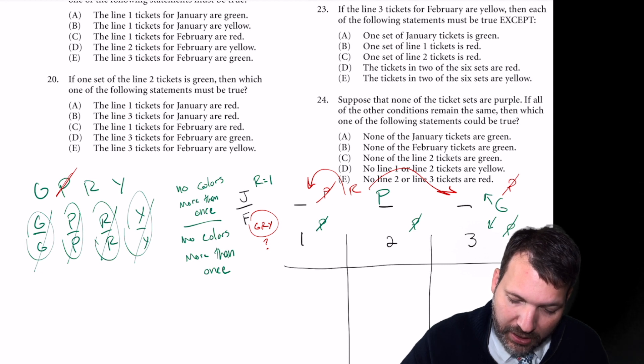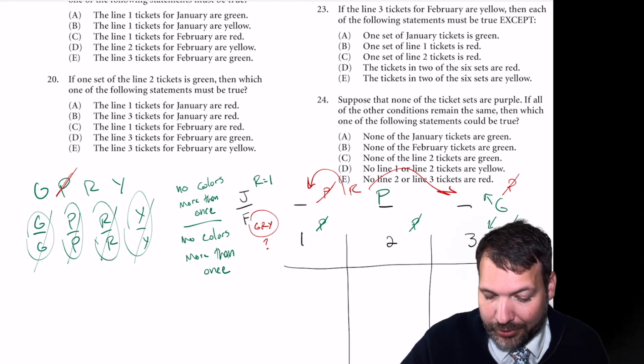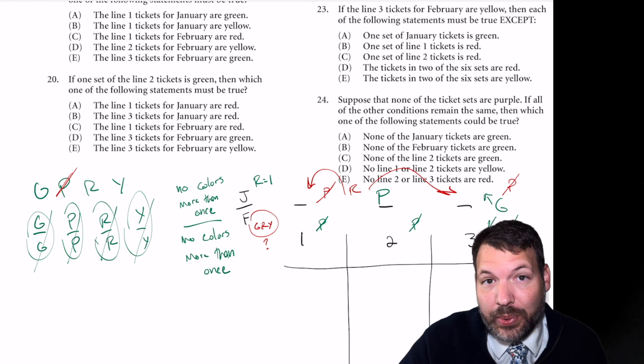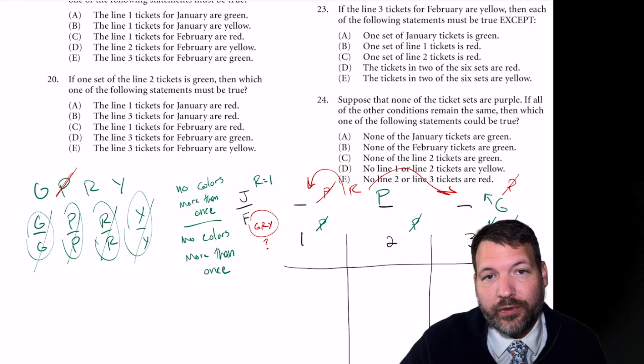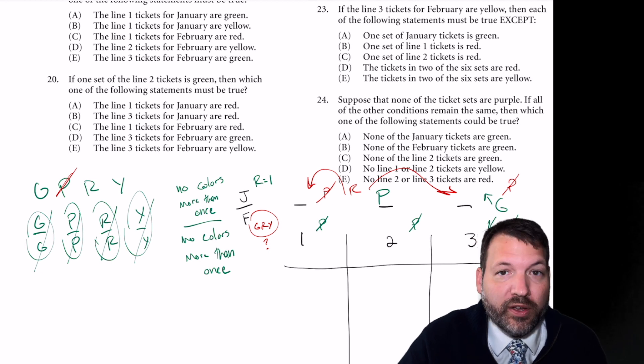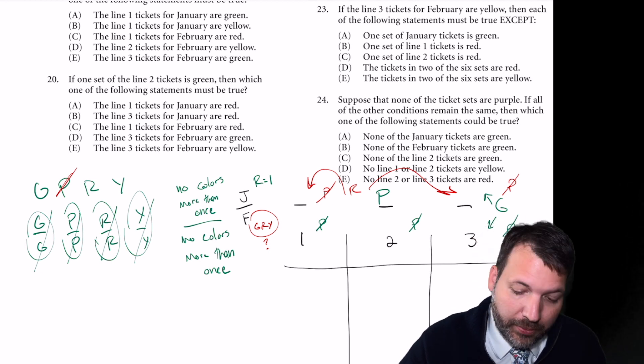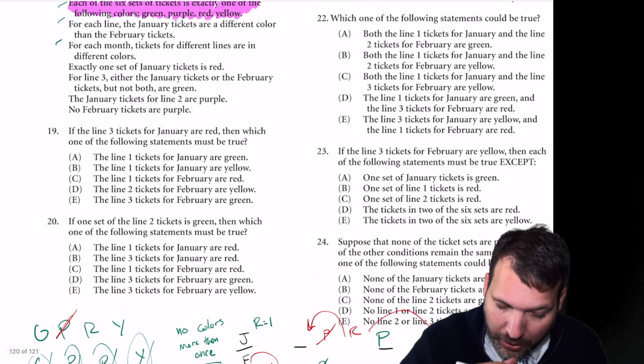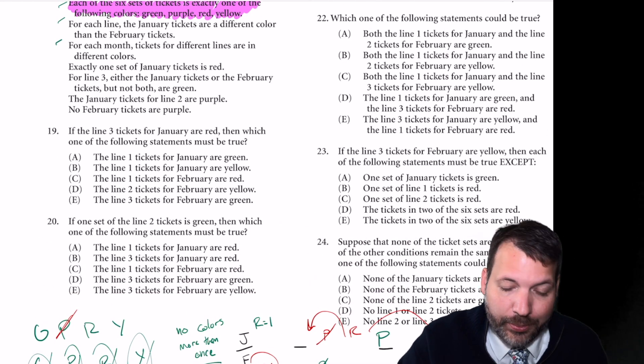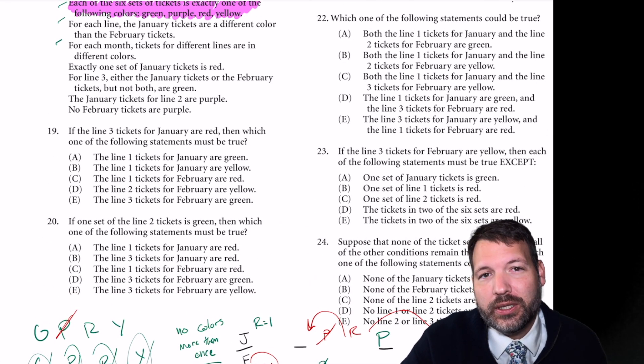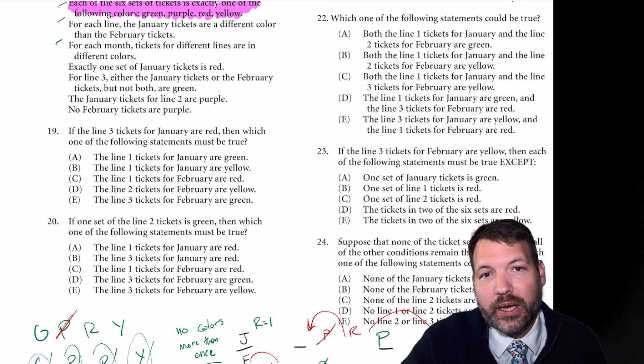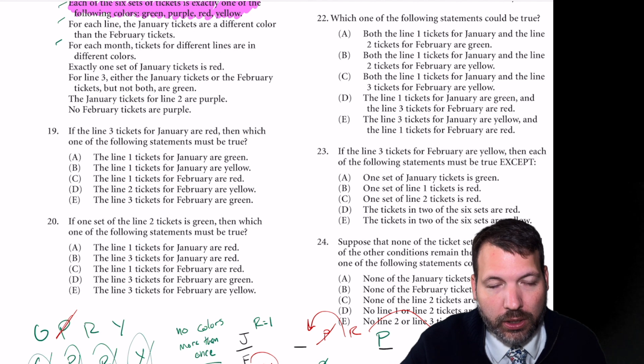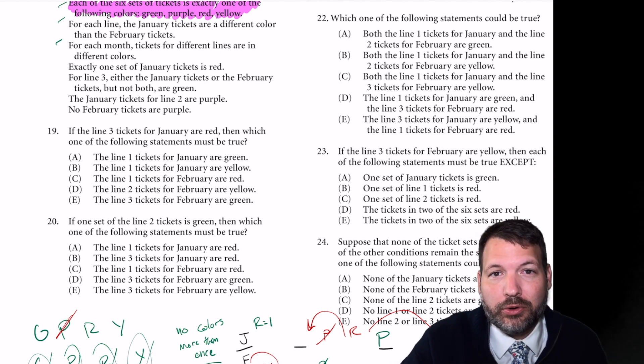And I believe that's it. I'm not seeing any other deductions. And as always, there may be other deductions, but deductions are simply natural consequences of the rules. So as long as we're following the rules, anything that would have been a deduction will come up for us anyway. Let's go ahead and jump into the questions. I'm looking at number 19 here. I'm always hoping that that first question is one of the complete and accurate style questions, because I can just use the rules one at a time to cross off answer choices till I come up with an answer.